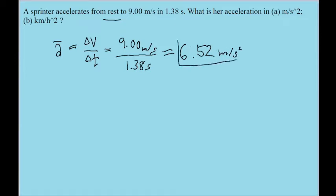This only satisfies part A of the problem, however, since part A asks us to find the acceleration in meters per second squared, while part B asks us to convert this into kilometers per hour squared. Same acceleration, but different units.